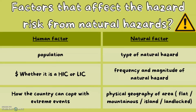What are the factors that affect the hazard risk from natural hazards — i.e., what affects how badly a country will be impacted? Human factors include the population of the country, whether it is a high income or low income country, and how the country can cope with extreme events based on its history. Natural factors include the type of natural hazard, the frequency and magnitude of the hazard, and the physical geography of the area — whether it is flat, mountainous, an island, or landlocked.